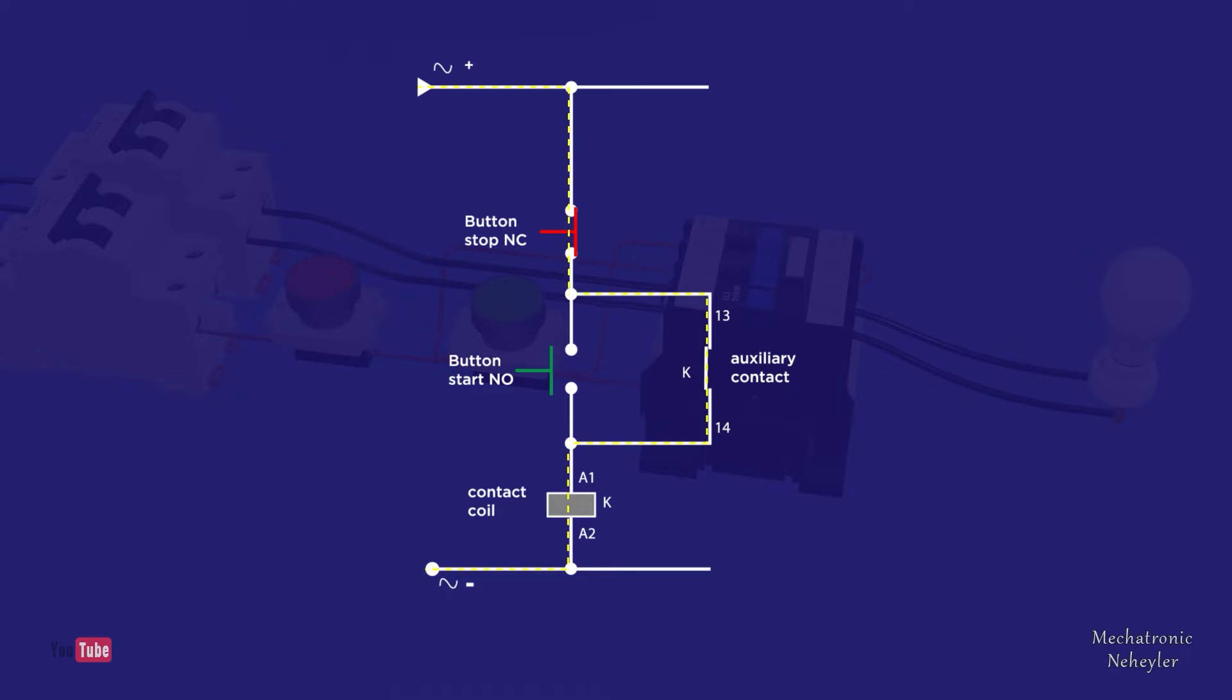In this way, the contactor coil remains self-latched or energized. It is said to be self-retaining because the energized coil allows the auxiliary contact to remain closed, and this contact being closed allows the coil to be kept energized. Both elements depend on each other.